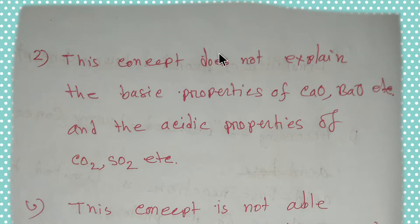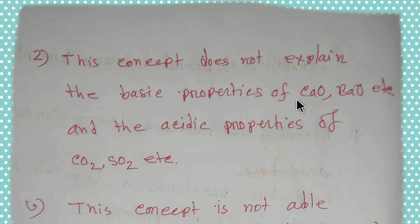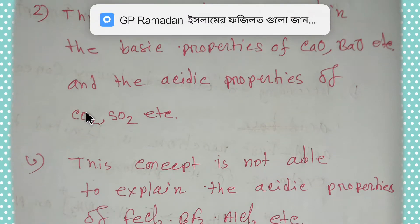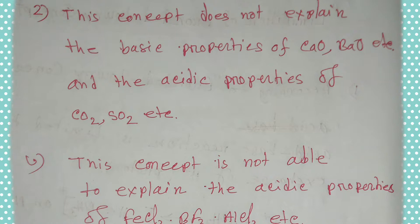The second limitation is that the Brønsted-Lowry concept does not explain the basic properties of calcium oxide or barium oxide. These compounds are basic in nature, but their basic properties cannot be explained by the Brønsted-Lowry concept. Similarly, the acidic properties of carbon dioxide and sulfur dioxide cannot be explained by this concept.